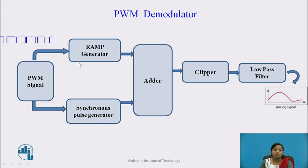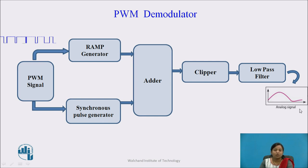This PWM signal is applied to the PWM demodulator circuit, which we have already studied in the previous lecture. With the help of all these blocks, we get a continuous time analog signal at the output of the PWM demodulator.